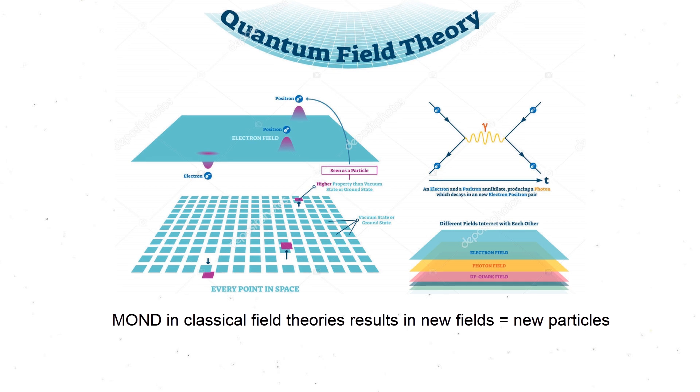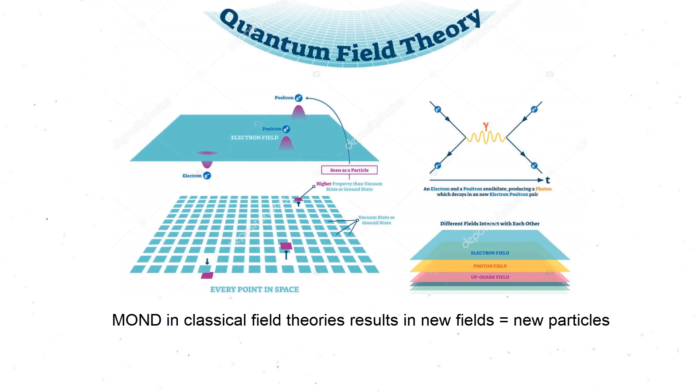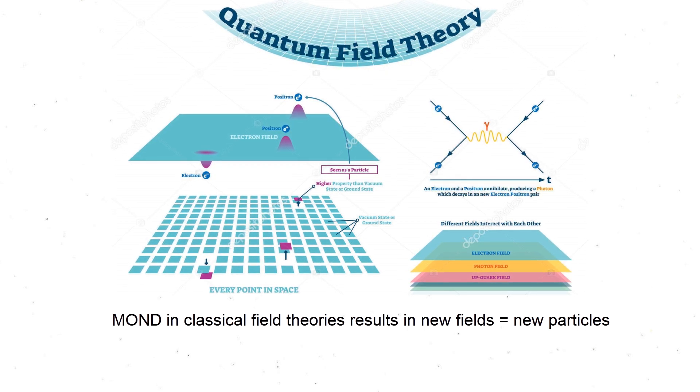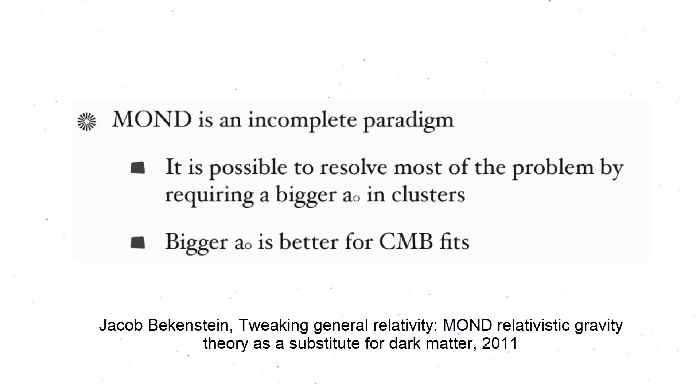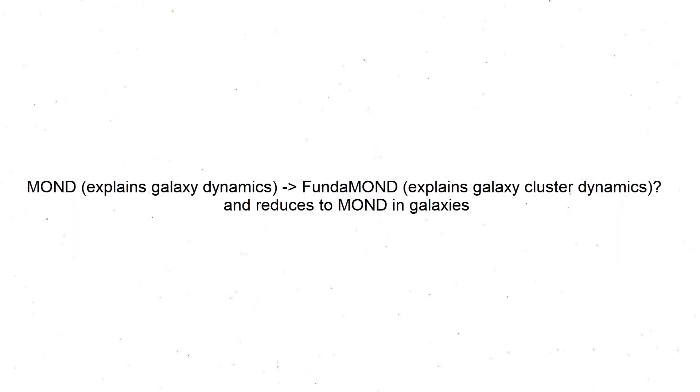A varying acceleration constant in MOND could also solve early universe structure formation, which is claimed to be due to physical dark matter. If one prefers to think that galaxy clusters are empty of physical dark matter, then the original MOND formulation must be modified and gravity should be even stronger for these systems than in MOND.